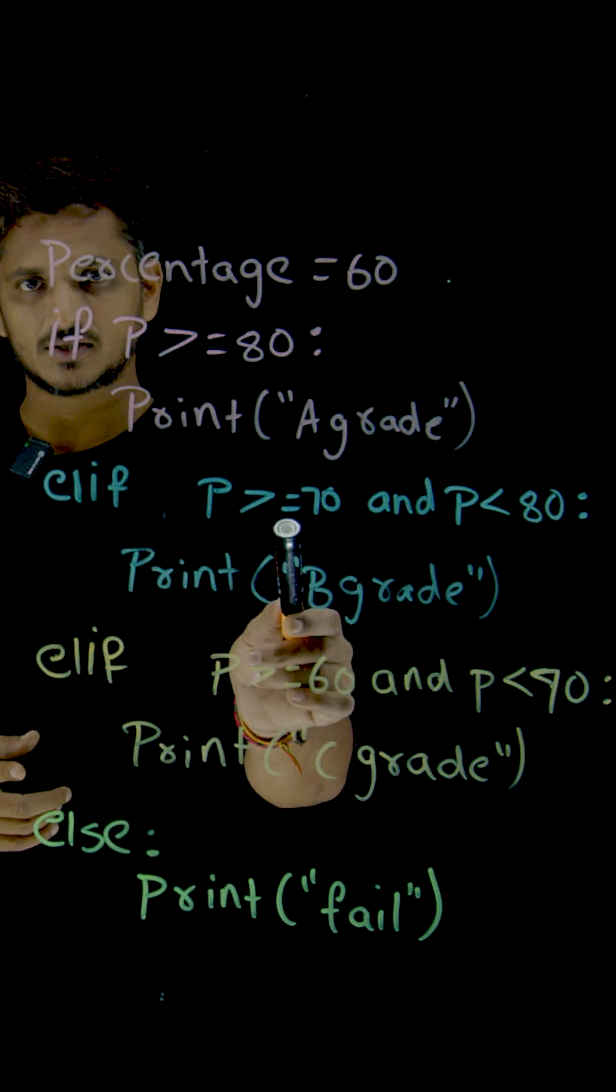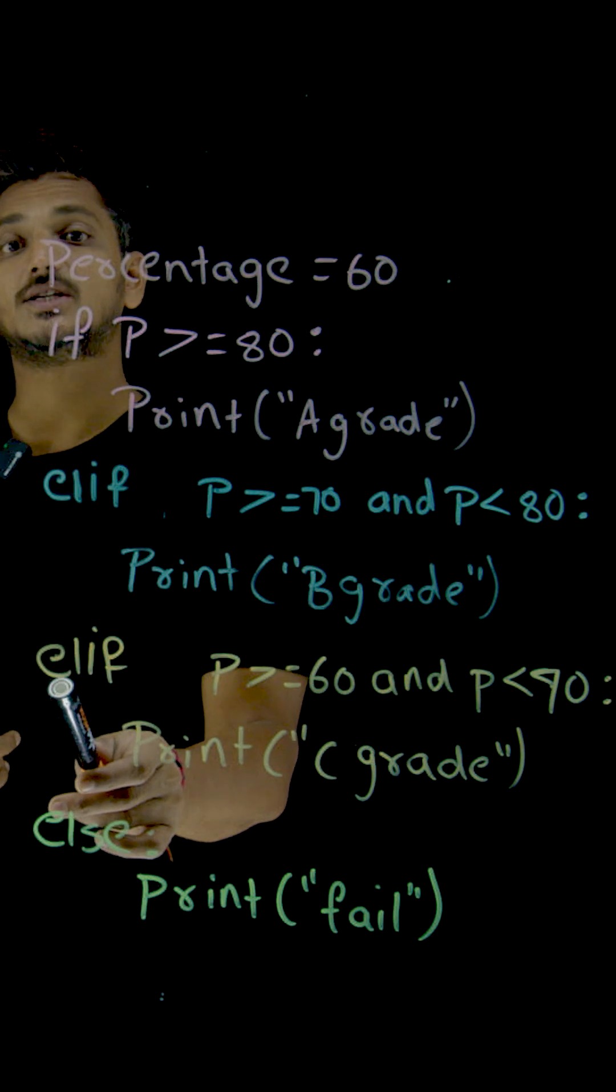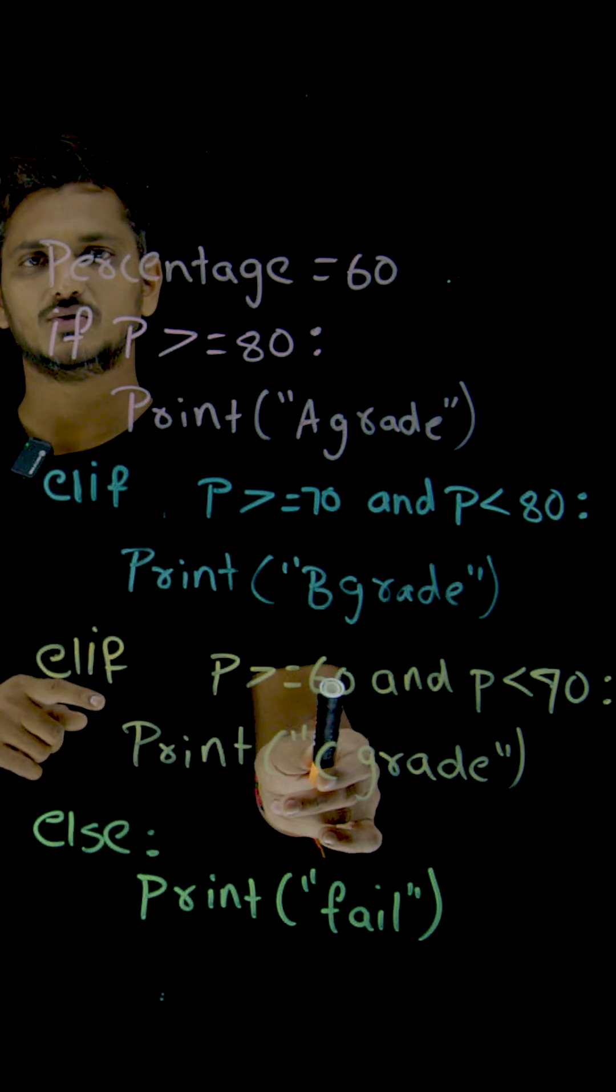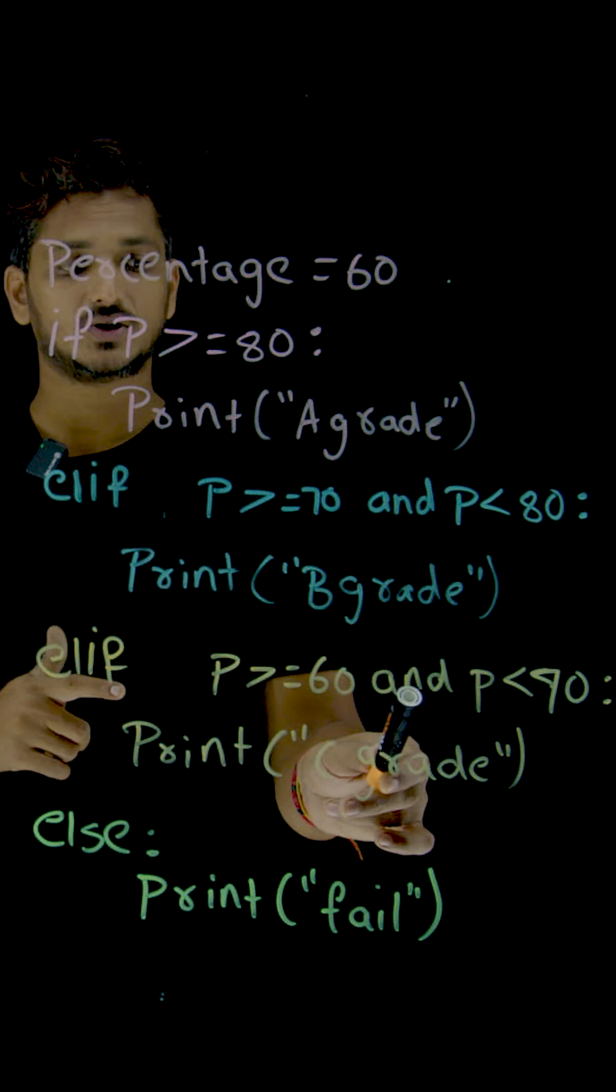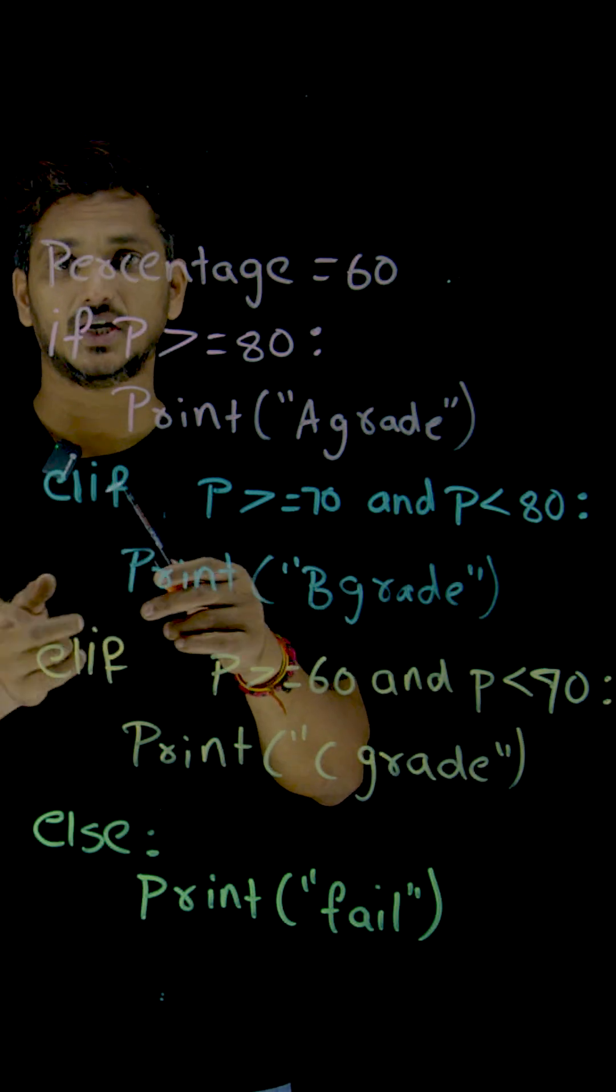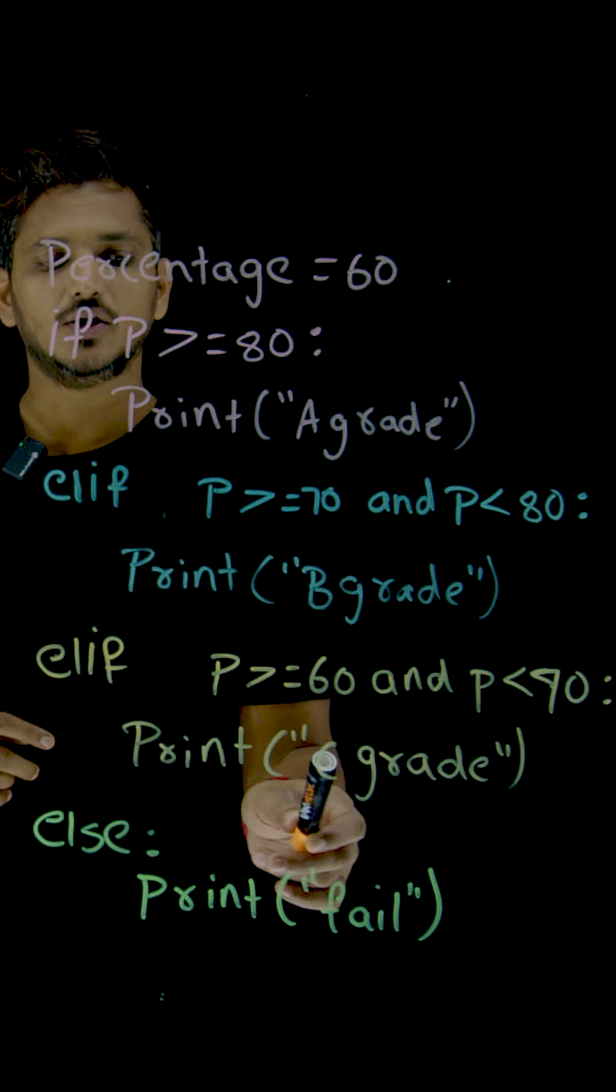If this is false, next again check the next else if condition. Else if P greater than or equal to 60, percentage greater than or equal to 60 and percentage less than 70. If your percentage is between 60 and 70, print you got C grade.